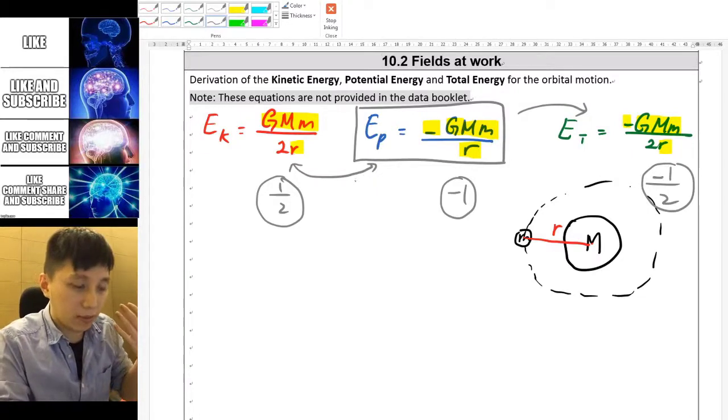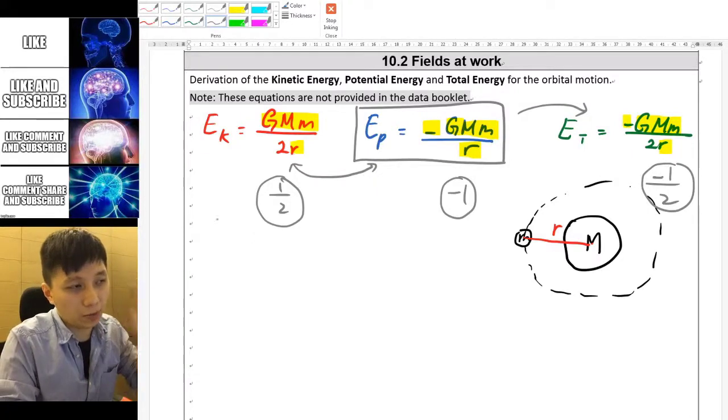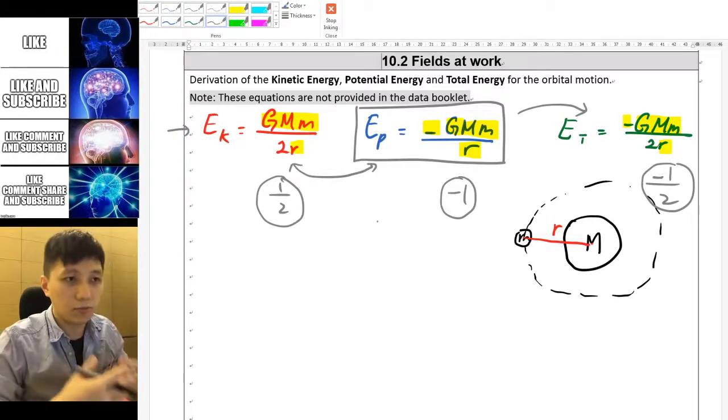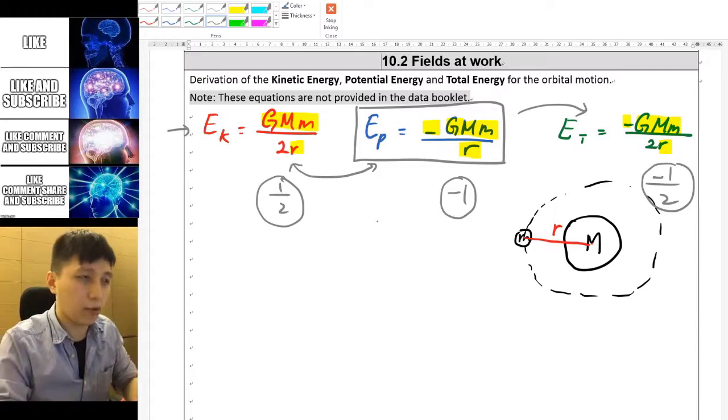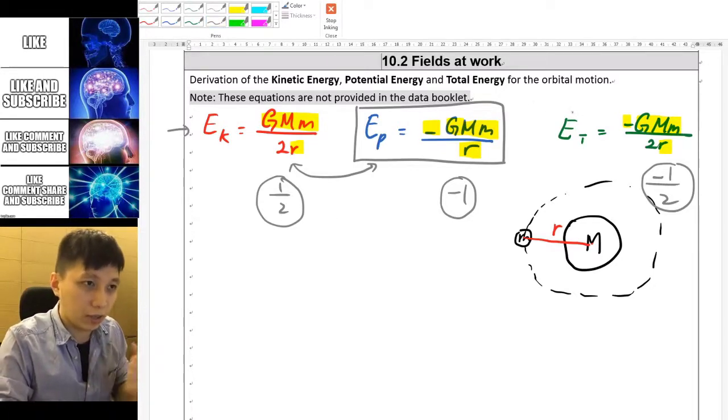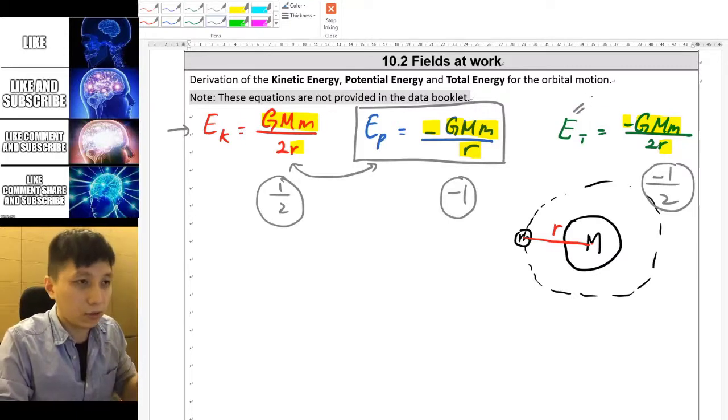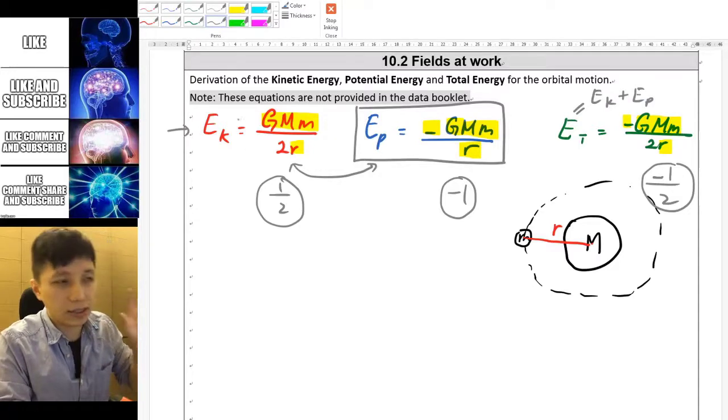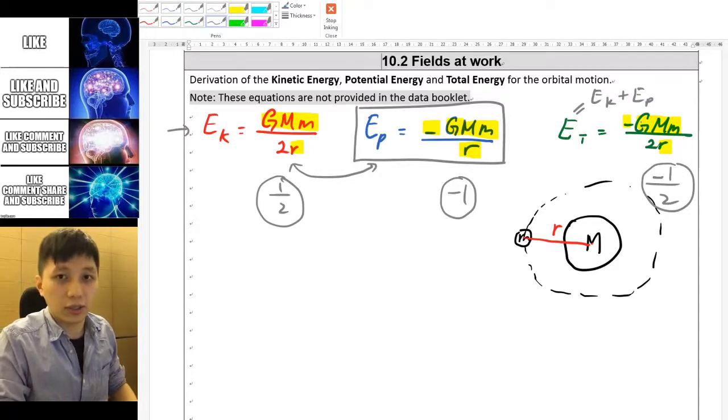So that means if you can obtain the expression for kinetic energy the whole equation would just be done for total energy because by definition these are the two energies that you have. So you can write down total energy equals kinetic energy plus potential energy. So once you get the kinetic energy done then you can get the total energy done.